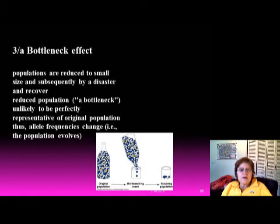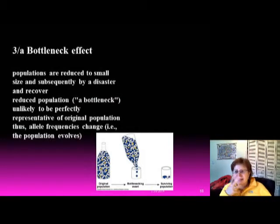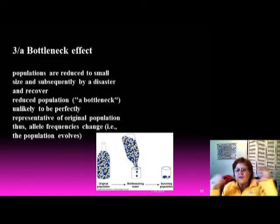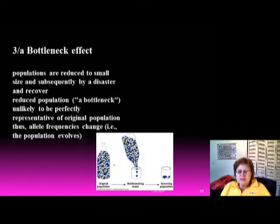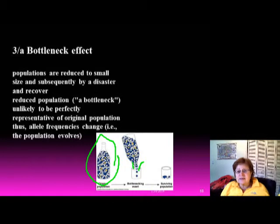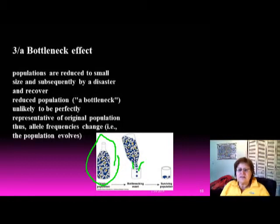The bottleneck effect happens when a major disaster — such as a large flood or volcanic eruption — dramatically reduces population size. The original population may have had great genetic diversity, but after the bottleneck some variations are eliminated, changing the allele frequency compared to the original population.